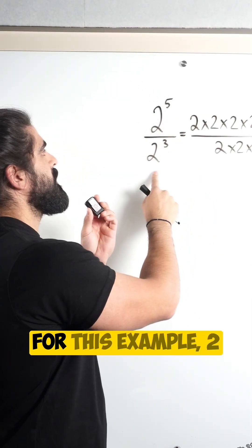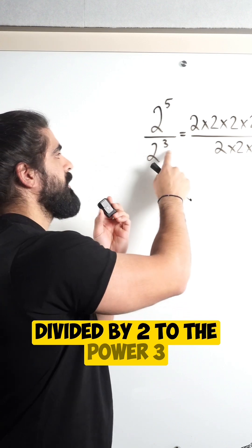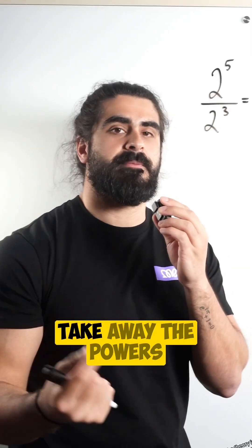Base number two for this example, two to the power of five divided by two to the power of three. The theory is that you take away the powers. Why is that?